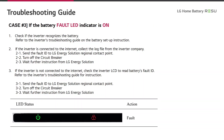Case number 3: the battery shows a fault LED and the indicator is on. Check if the inverter recognizes the battery, and refer to the inverter's troubleshooting guide on battery setup instructions. If the inverter is connected to the internet, collect the log file from the inverter company, send the fault ID to LG Energy Solution regional contact point, turn off the circuit breaker, and wait for further instruction from LG Energy Solution. If the inverter is not connected to the internet, check the inverter LCD to read the battery's fault ID, refer to the inverter's troubleshooting guide, send the fault ID to LG Energy Solution regional contact point, turn off the circuit breaker, and wait for further instruction.